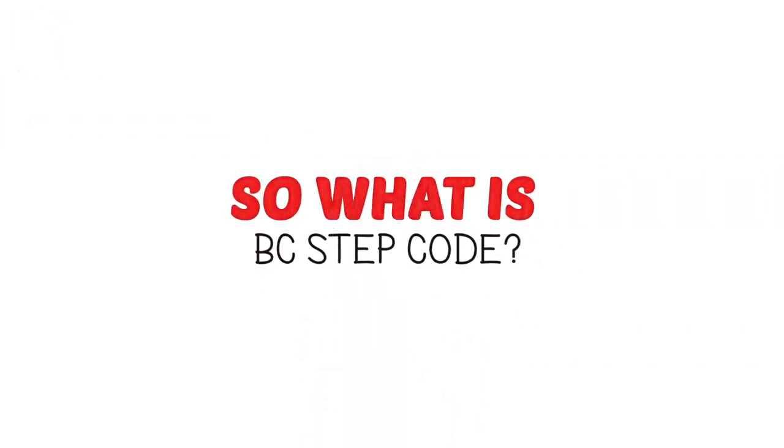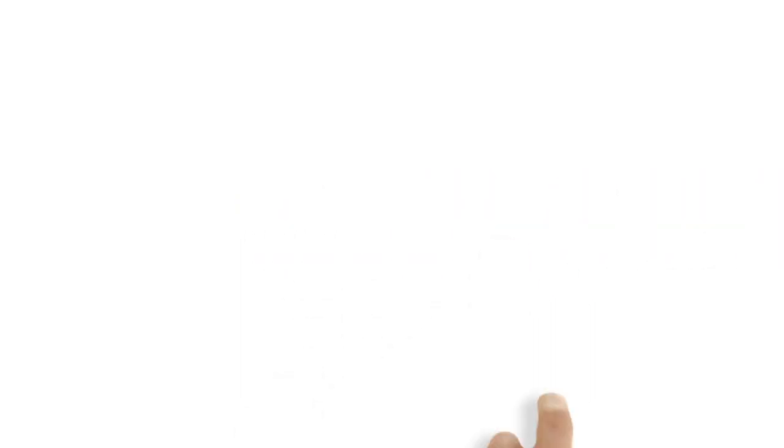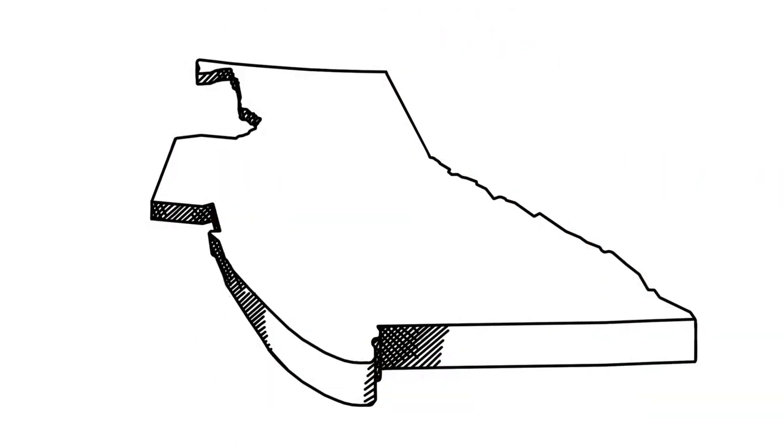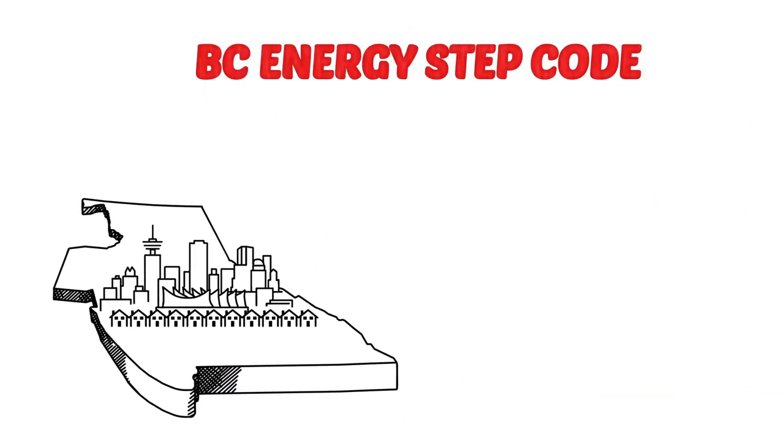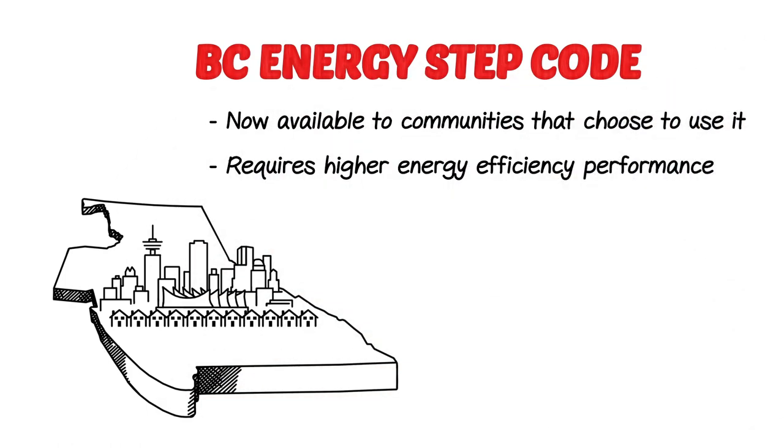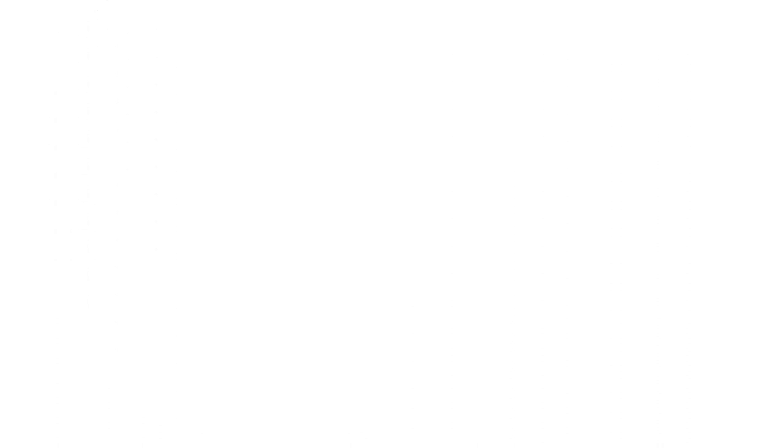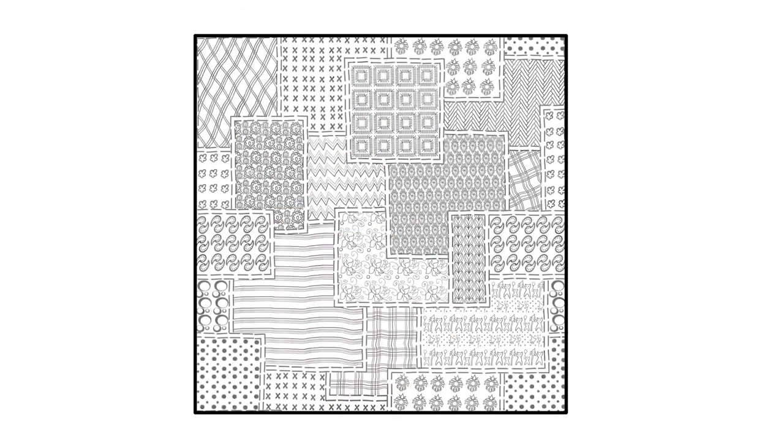So what is BC Step Code? The BC Energy Step Code is a provincial regulation that came into force in December 2017. Local governments can use it, if they wish, to require builders to meet a higher level of energy efficiency performance than what the code would normally require. The BC Energy Step Code eliminates the patchwork of energy efficiency standards that local governments were working with. It's rooted in a performance-based approach. But exactly what does it measure?